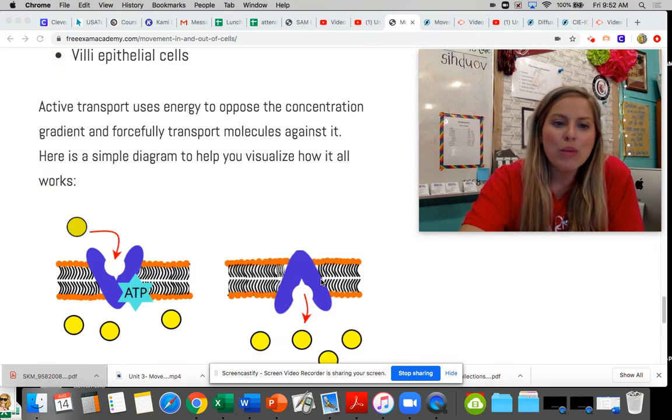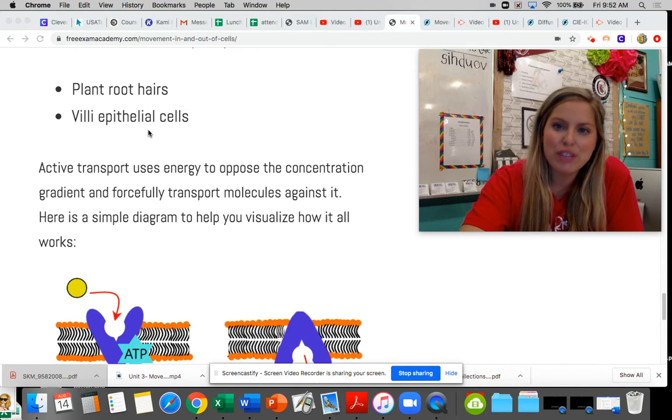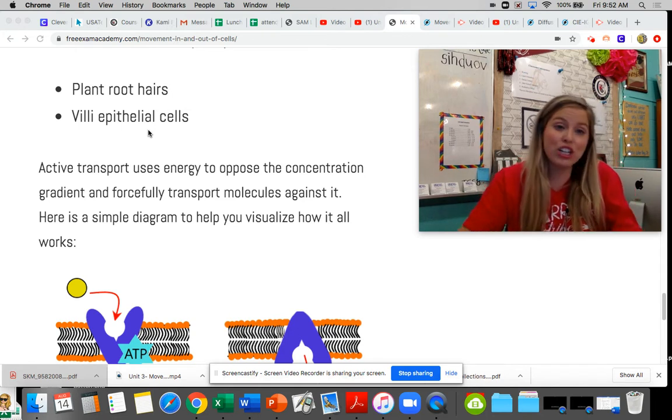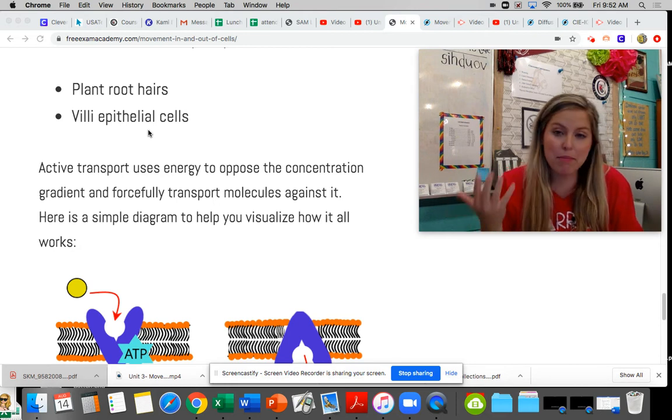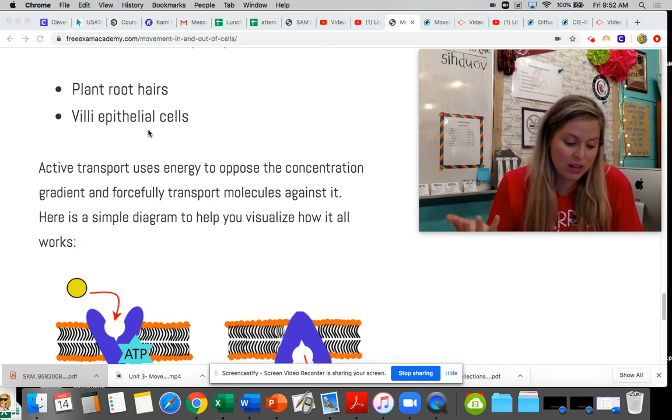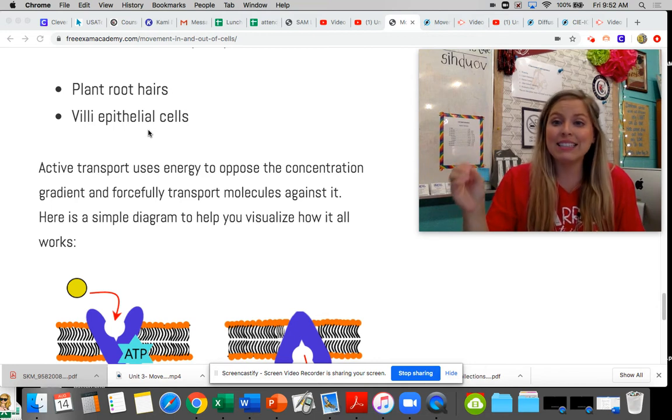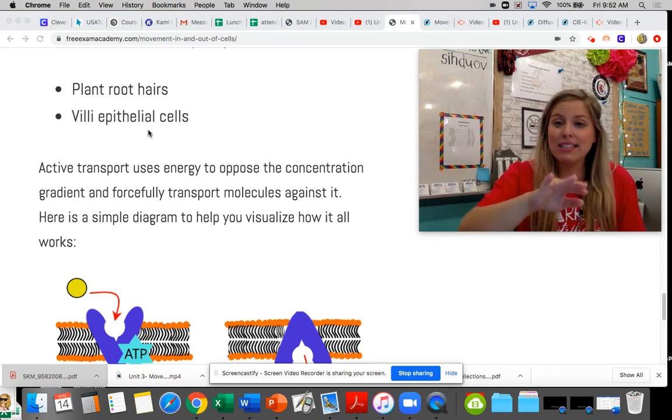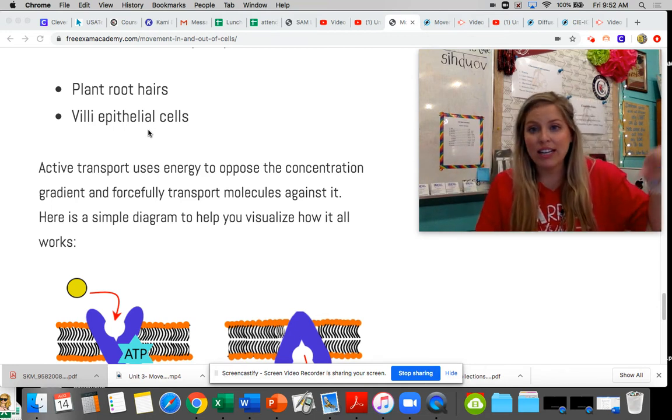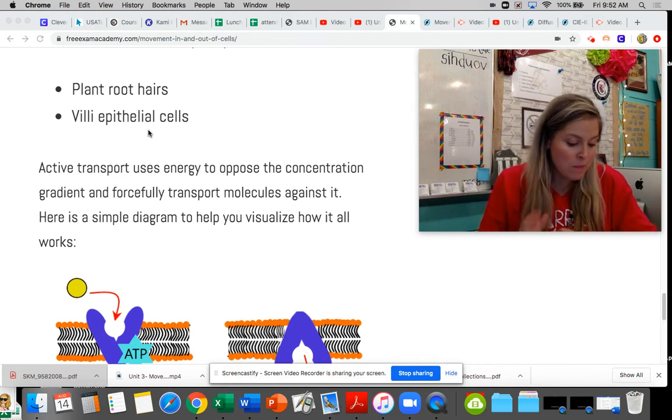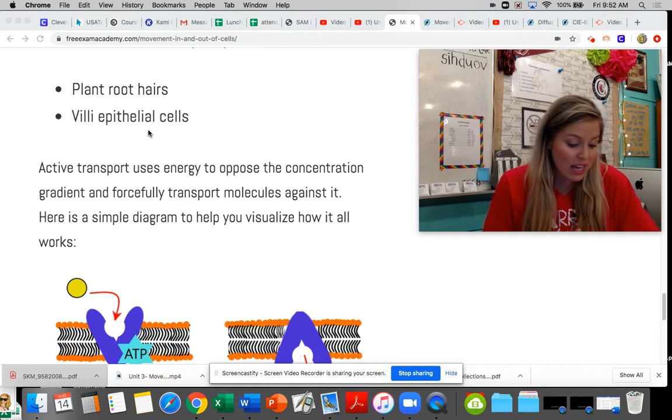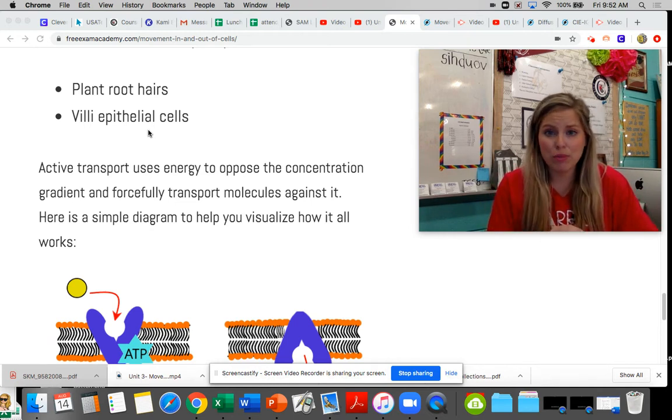When we look specifically at where active transport is occurring, it's occurring in plant root hairs where substances like mineral salts and phosphates are coming from the soil and actively being transported into that root hair cell and then on into the plant where it is needed. It's also occurring in our villi of our small intestine as well as kidney tubules.